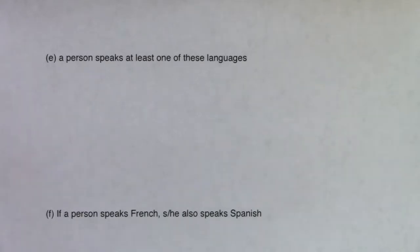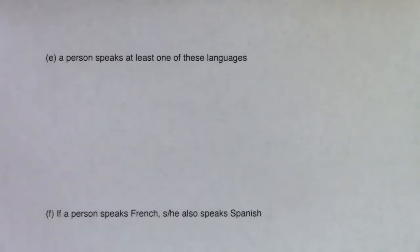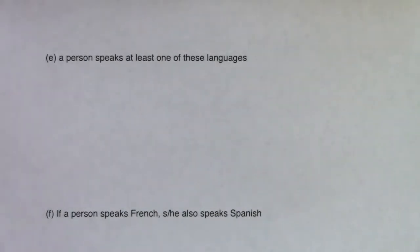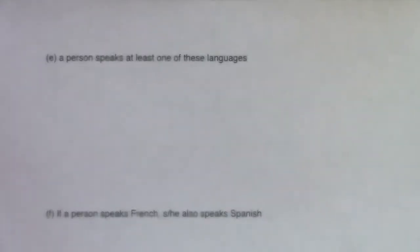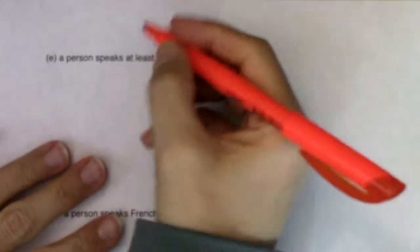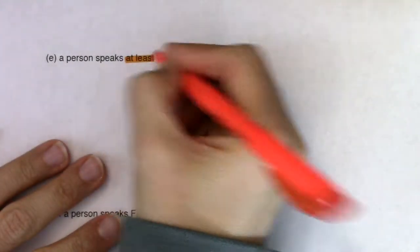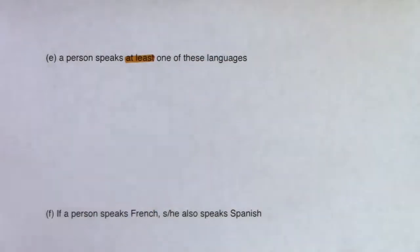Let's keep going with that Venn diagram problem. So in Part E, we are asked: what is the probability that a person speaks at least one of these languages? The phrase I want to highlight here is that you are speaking at least one of these languages.